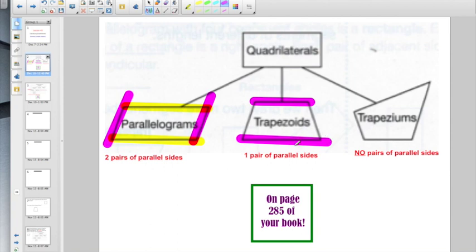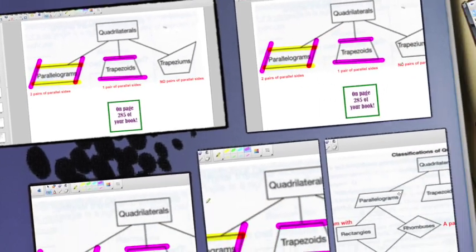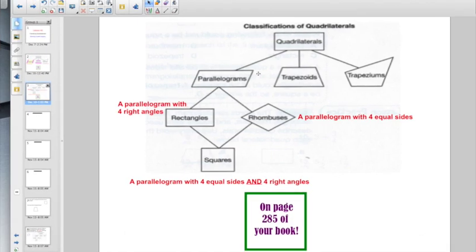Or you could also have a trapezium, where there's no pairs of parallel sides. Make sense so far? If it didn't, I strongly recommend hitting rewind because we have some more classifications to go on to after this. So, these were the three main classifications that I just showed you.